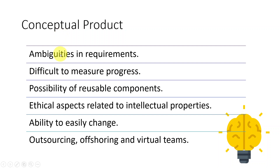One of the challenges we face is ambiguity in understanding the requirements, because it's a conceptual product and it's very difficult to explain. Also, when you are developing the software, it's difficult to measure the progress. On the positive side, since software is conceptual, there's a high possibility of reusability — though that raises concerns like intellectual property and copyrights. Unlike physical products, software is easy to change. And it's easy to develop software using virtual teams, since team members can be in different parts of the world and still contribute.